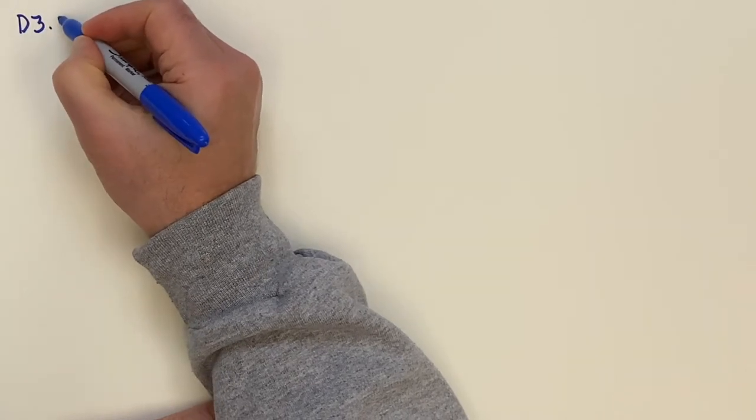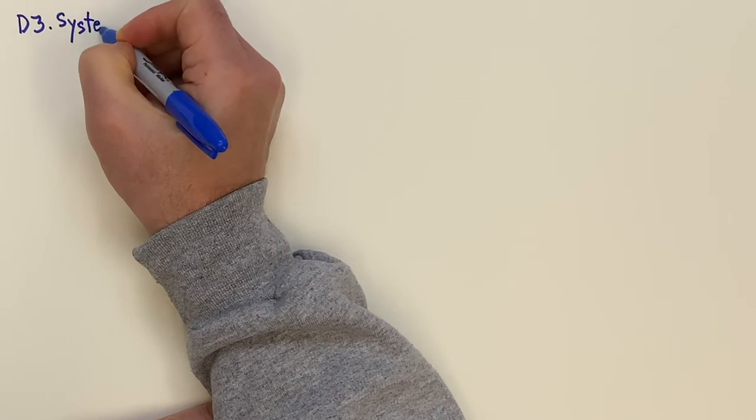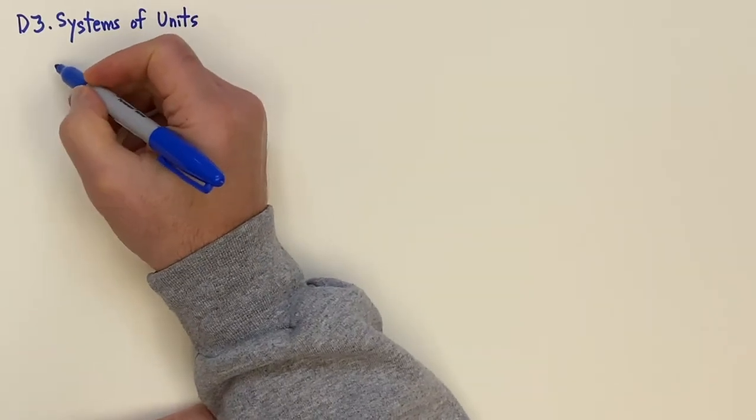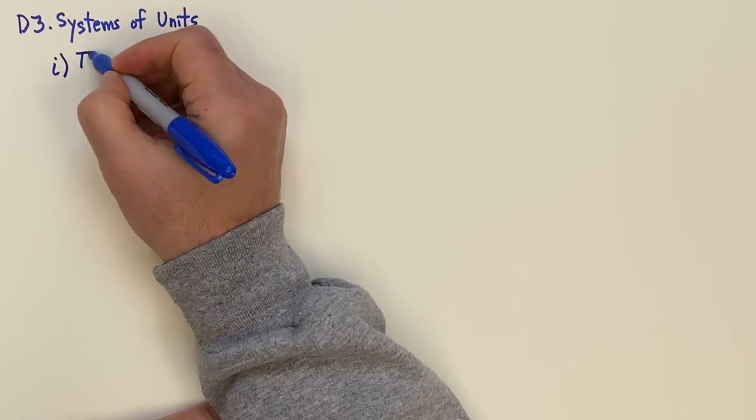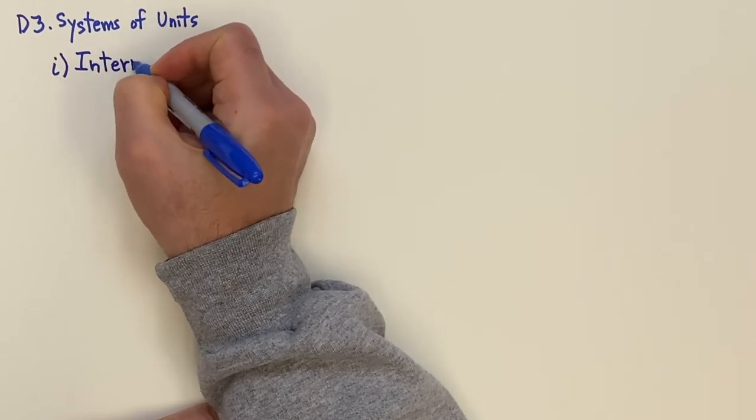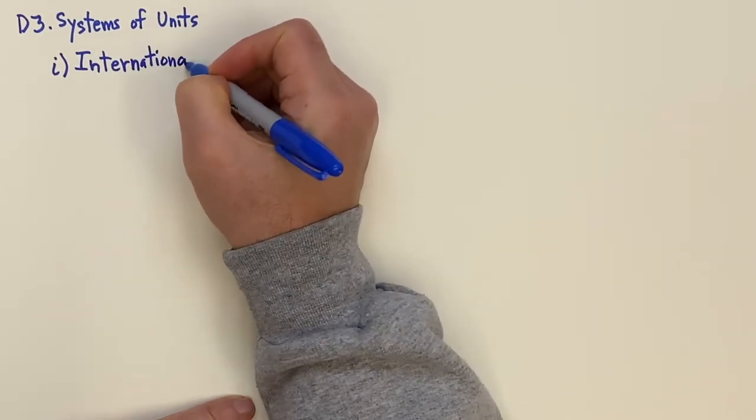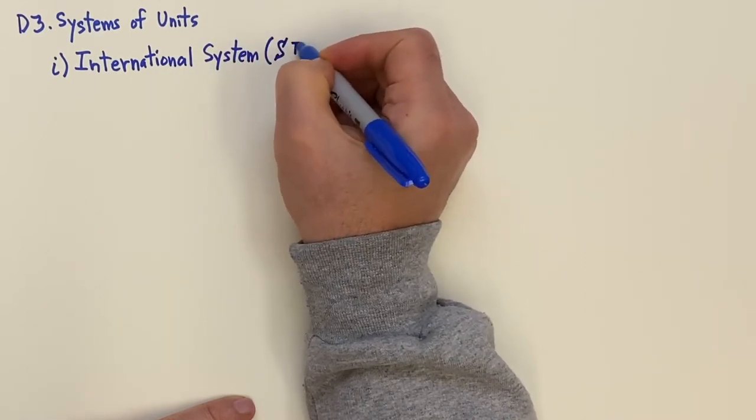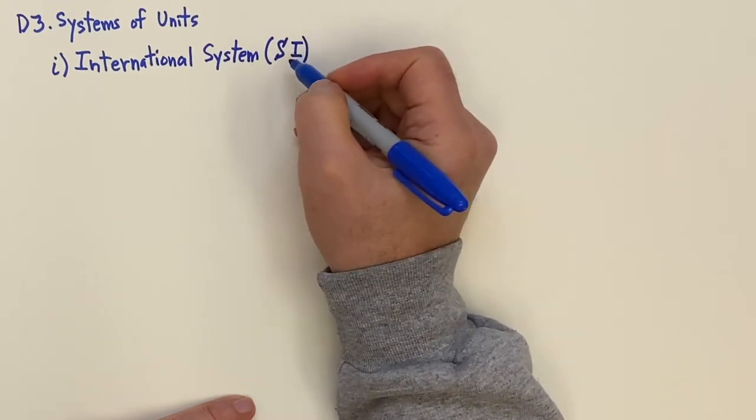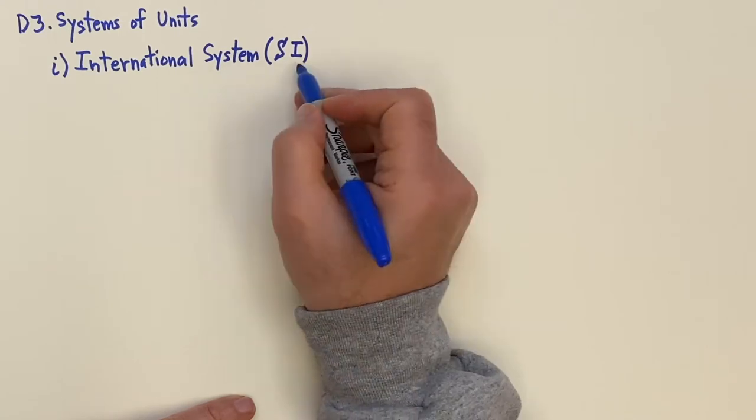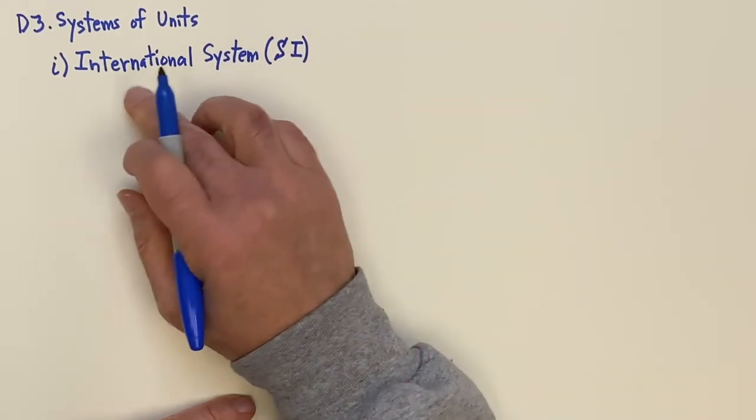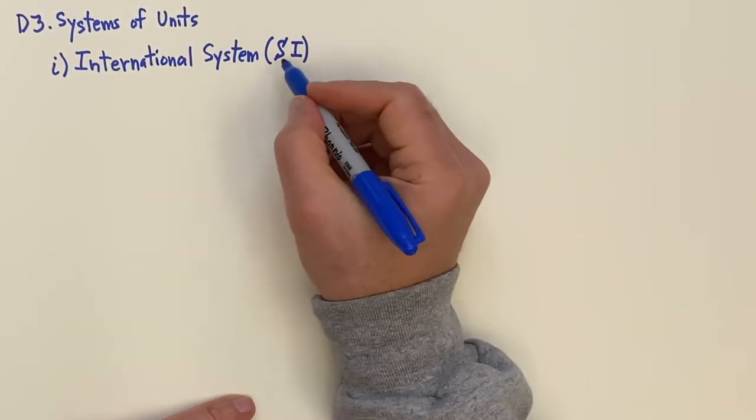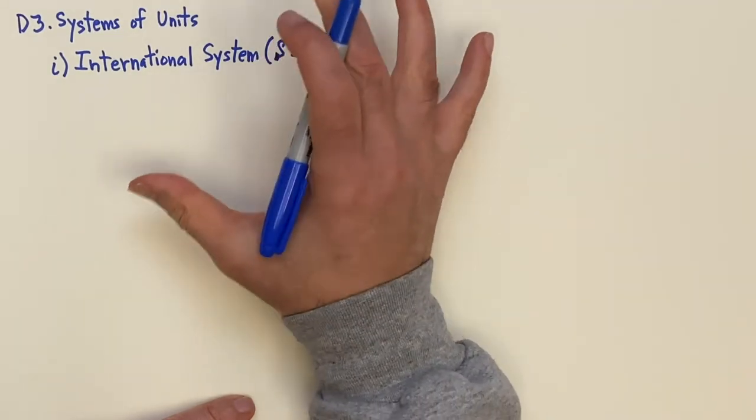D3 systems of units. Now the main one is the international system, the metric system, which we write SI because in French, pardon my French here if I don't pronounce this correctly, but système international d'unités. In other words, the international system of units. So système international, system comes first. So we say the SI, the SI system of units.